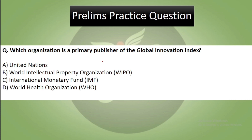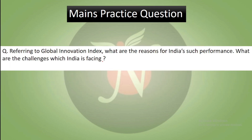Now for today's practice questions. Prelims question: Which organization is the primary publisher of the Global Innovation Index? Options: (A) United Nations, (B) World Intellectual Property Organization, (C) International Monetary Fund, (D) World Health Organization. You can type the answer in the comment section. Mains practice question: Referring to the Global Innovation Index, what are the reasons for India's strong performance, and what are the challenges India is facing? That's all for today's video and session — thank you, have a nice day, and stay tuned with Analyst IAS for your better preparation.